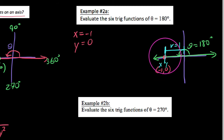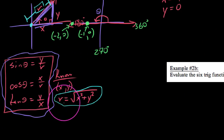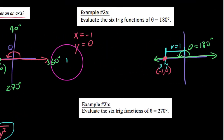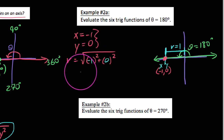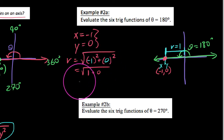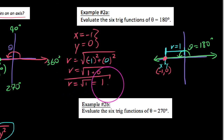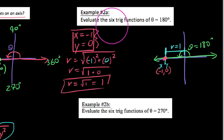Just because I don't see a right triangle doesn't mean I can't use the Pythagorean theorem. We say r is equal to the square root of x squared plus y squared. With our point negative one, zero: negative one squared is one, zero squared is zero. So r equals the square root of one, which is plus or minus one. We keep the positive value, so r equals one.